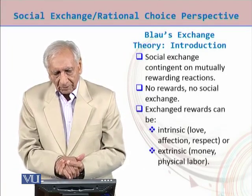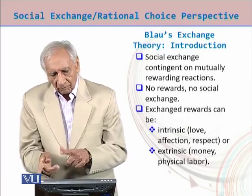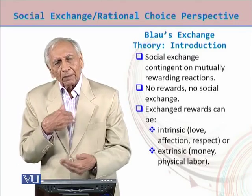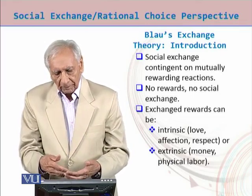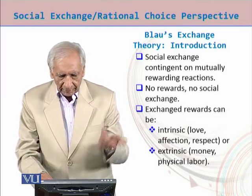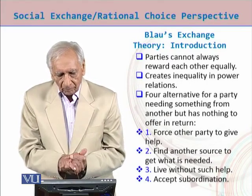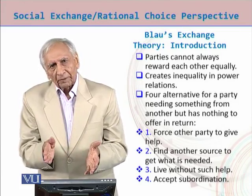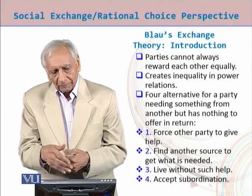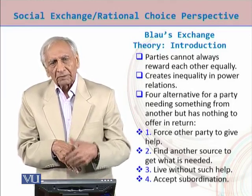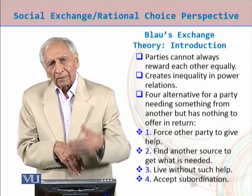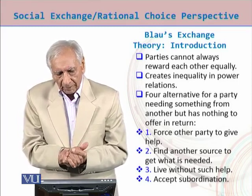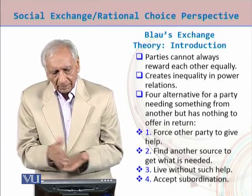Social exchange is contingent on mutually rewarding actions — no rewards, no exchange. Exchange rewards can be intrinsic, like love and affection or respect for the other, or extrinsic, like money or labor. Parties cannot always reward each other equally; they may have different resources and different needs for services available from the other party, which creates inequality in power relations. There are four alternatives for a party needing something from another but having nothing to offer in return.